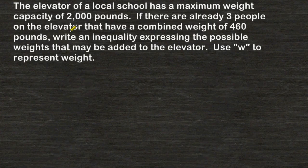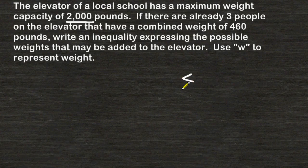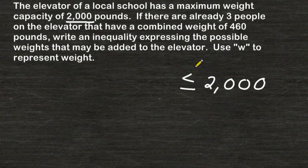The problem provides the information that the maximum weight capacity of the elevator is 2,000 pounds. This means that the weight on the elevator cannot go over that amount — whatever weight we load on the elevator must be less than or equal to 2,000. Whenever a problem says you cannot go over a certain amount or there is a maximum, the inequality sign you must use is going to be less than or equal to.